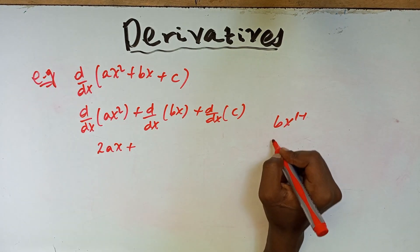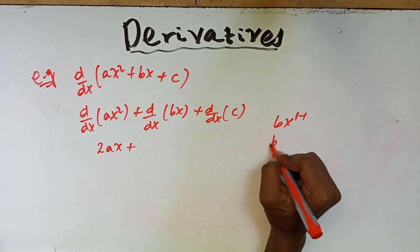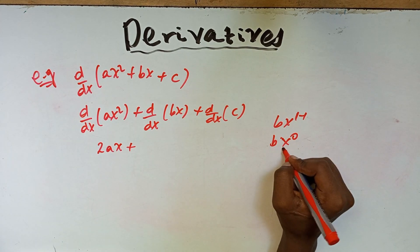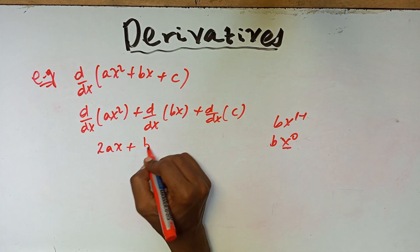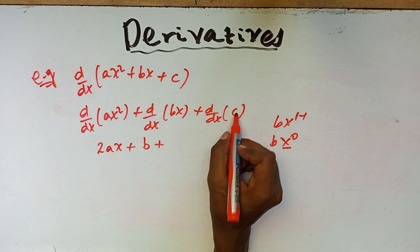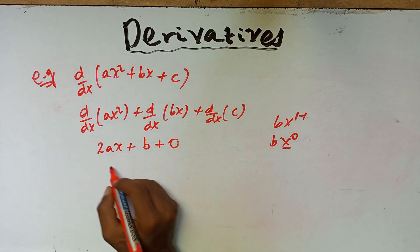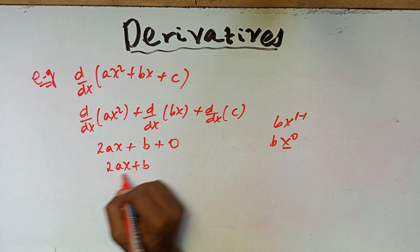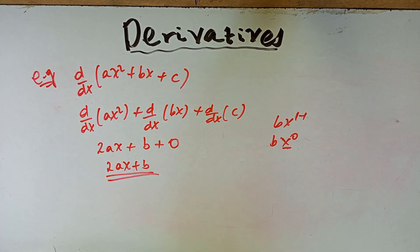For bx, the power of x is one, so one minus one gives x to the power of zero, which is 1, leaving just b. The derivative of the constant c is zero. So the final answer is 2ax plus b.